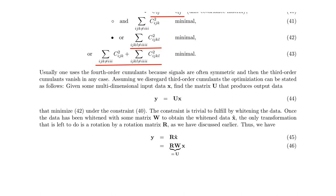The unmixing of the original data can be viewed as a rotation of the whitened data — indicated by a hat. Whitening can be done easily with principal component analysis, giving W times X. Multiplying the rotation matrix of the whitened data with the whitening matrix yields the final unmixing matrix U.